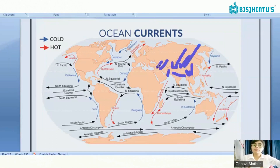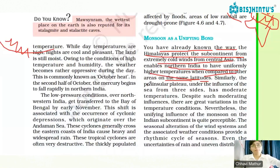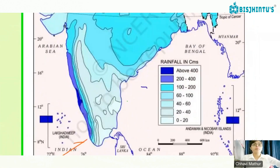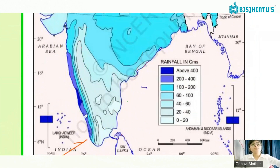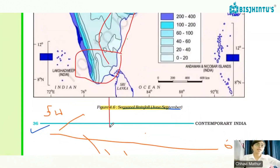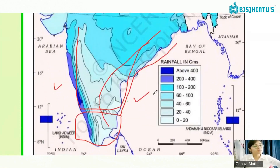The Deccan Plateau, under the influence of the sea from three sides, has moderate temperatures. It is also important that our country is located close to the equator and close to water bodies, which gives us moderating temperatures.